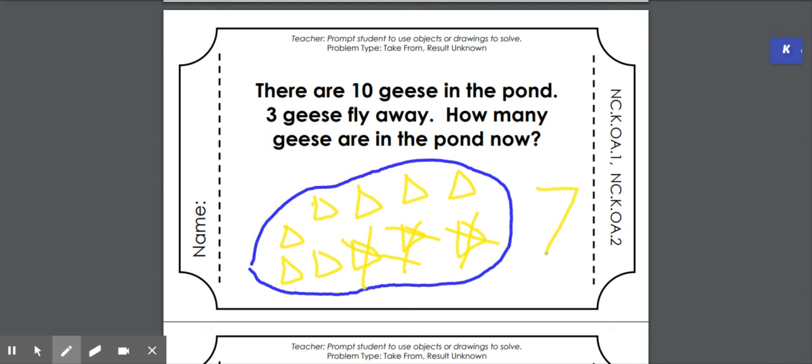Now, can I write a subtraction sentence? I sure can. It says that there are ten. Ten geese in the pond. Remember, we start back at the beginning. How many geese we drew to start with? Ten. So I have ten. And we had some geese fly away. So ten minus three equals – how many did we have left? Seven. Ten minus three equals seven. Great job.